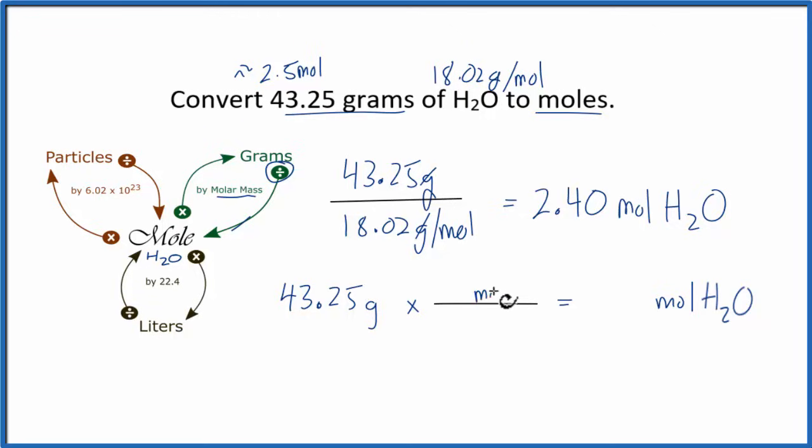So we'll put desired, that's the moles of H2O, over the given, which are grams. You can kind of think of it like this: desired over given. So we go to our conversion factor, and we see one mole is 18.02 grams. We multiply the top, divide by the bottom, and we get the same answer, 2.40 moles of H2O. We can see that when we do that, the grams cancel out, and we're left with moles of H2O. It's very similar to what we did before, but teachers really like to see it done this way.